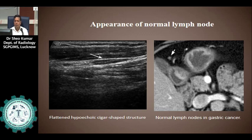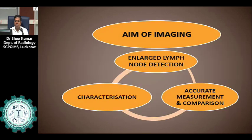Regarding the normal appearance of lymph nodes: on the ultrasound image on the right side, the arrow shows a flattened hypoechoic cigar-shaped structure, which is a normal lymph node. On the left side, the CT scan image shows the arrow indicating small soft tissue attenuating lymph nodes.